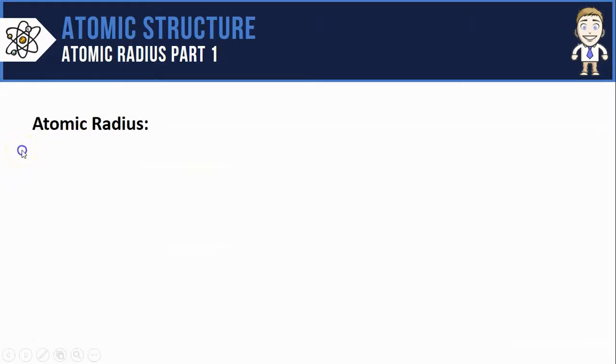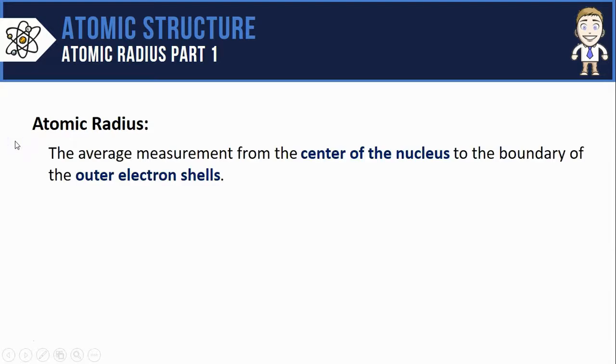In this video we'll start learning about one property where periodicity exists called atomic radius. Atomic radius is defined as the average measurement from the center of the nucleus to the boundary of the outer electron shells.